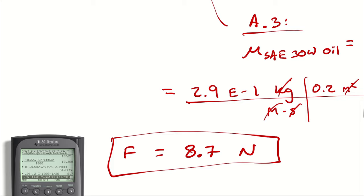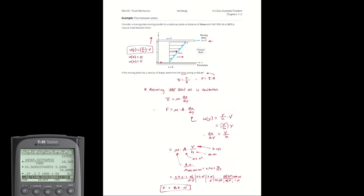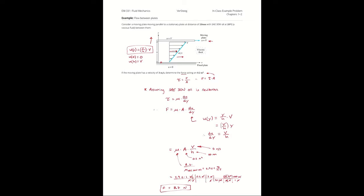So there are 8.7 newtons of force acting on a 0.2 square meter section of the plate. And note that that's the drag force on the moving plate.